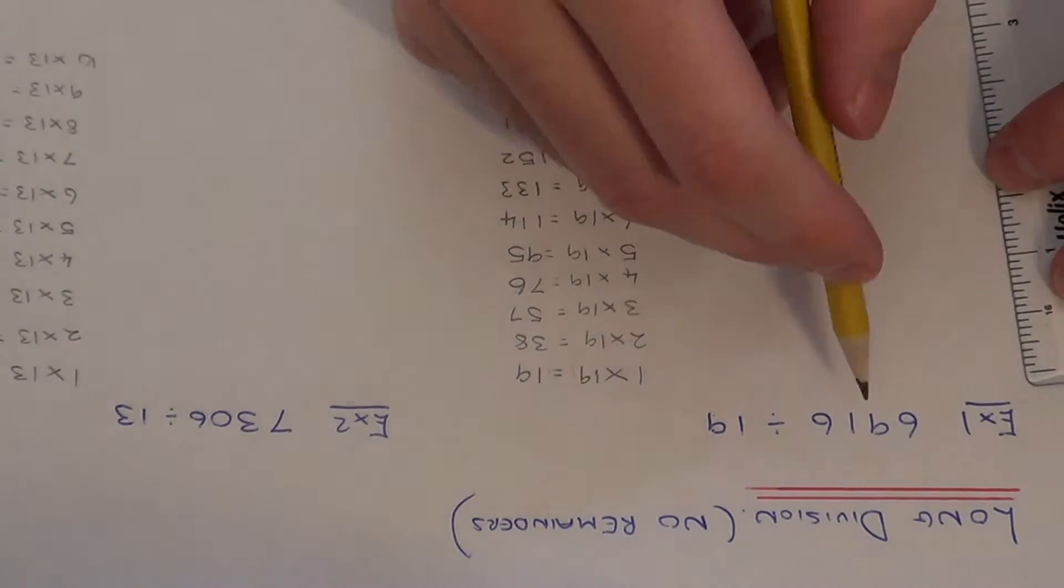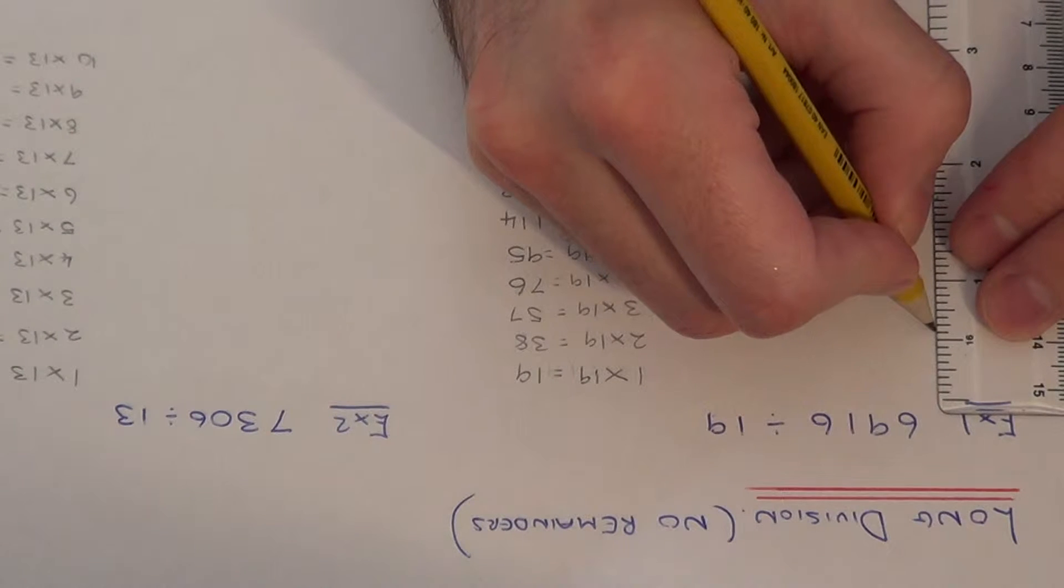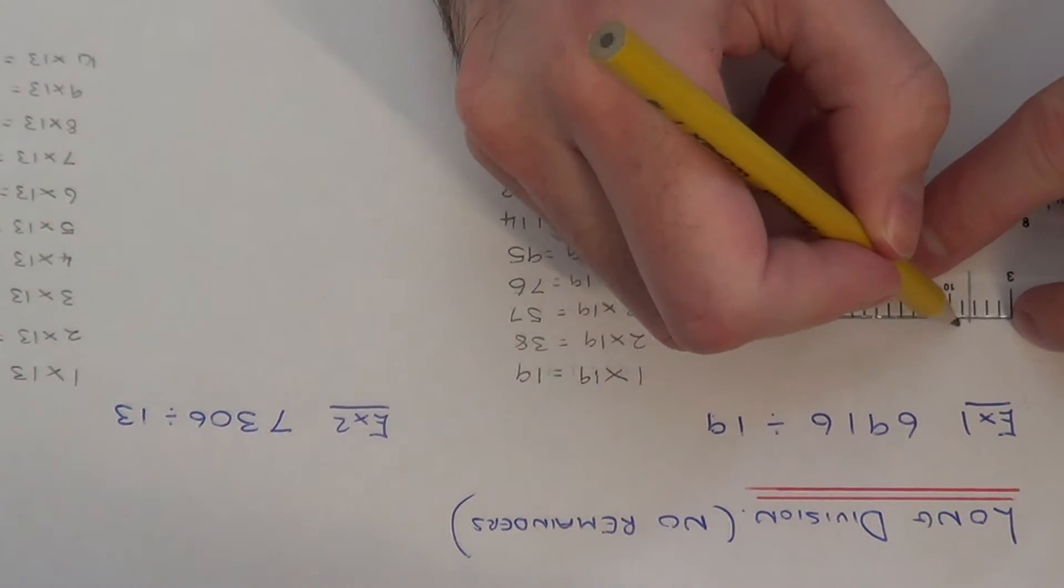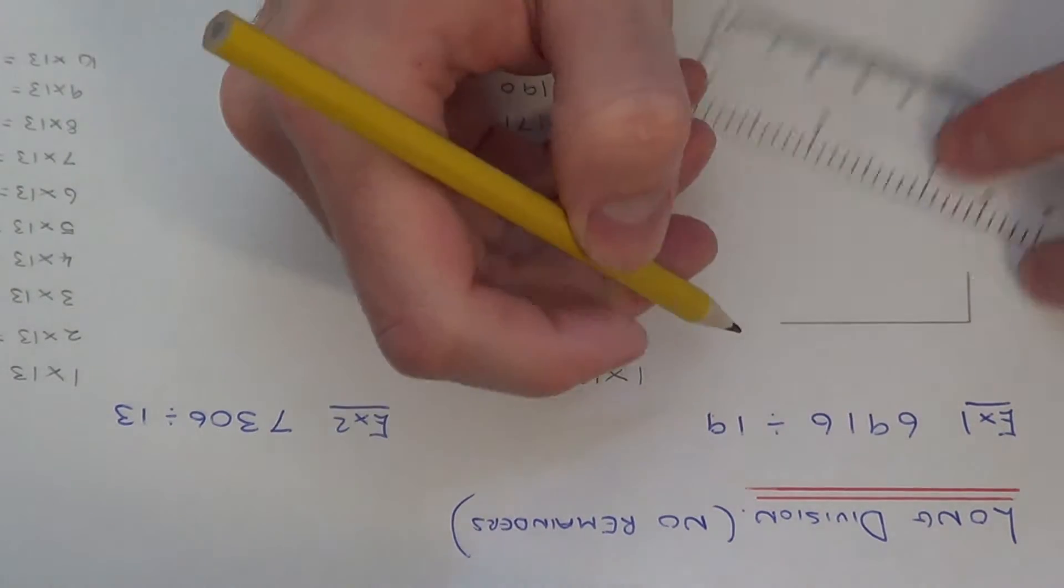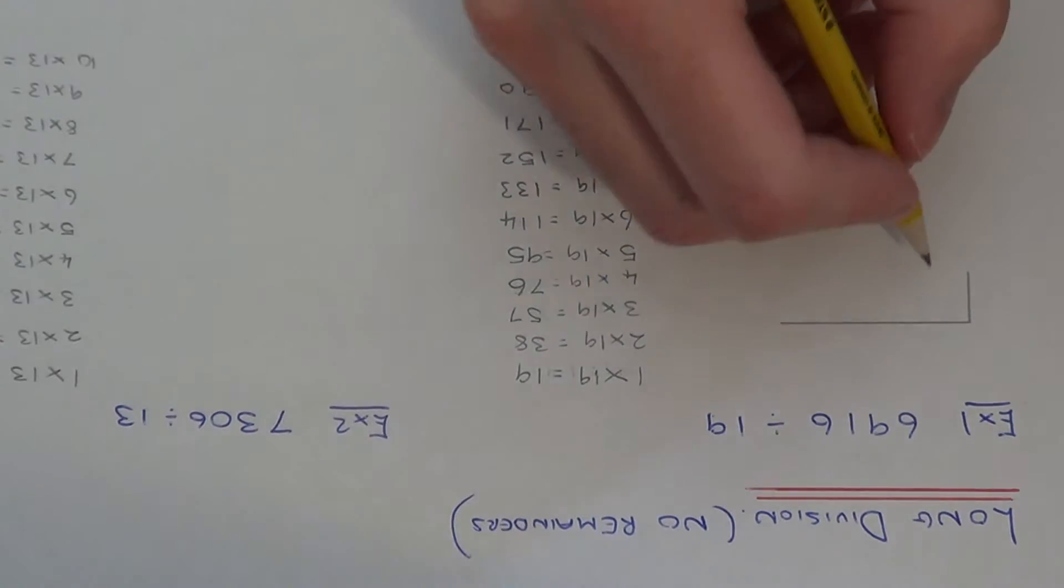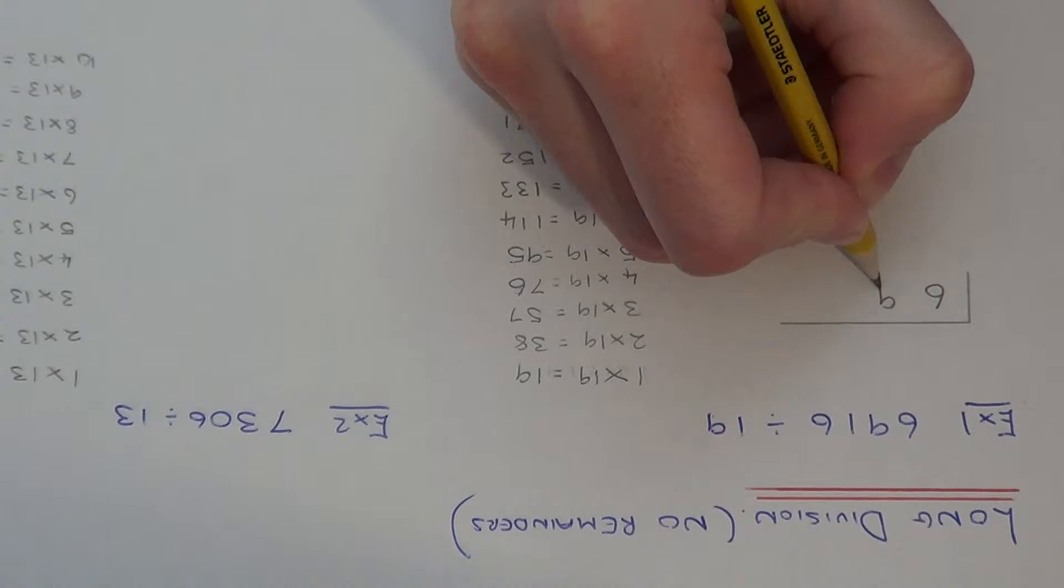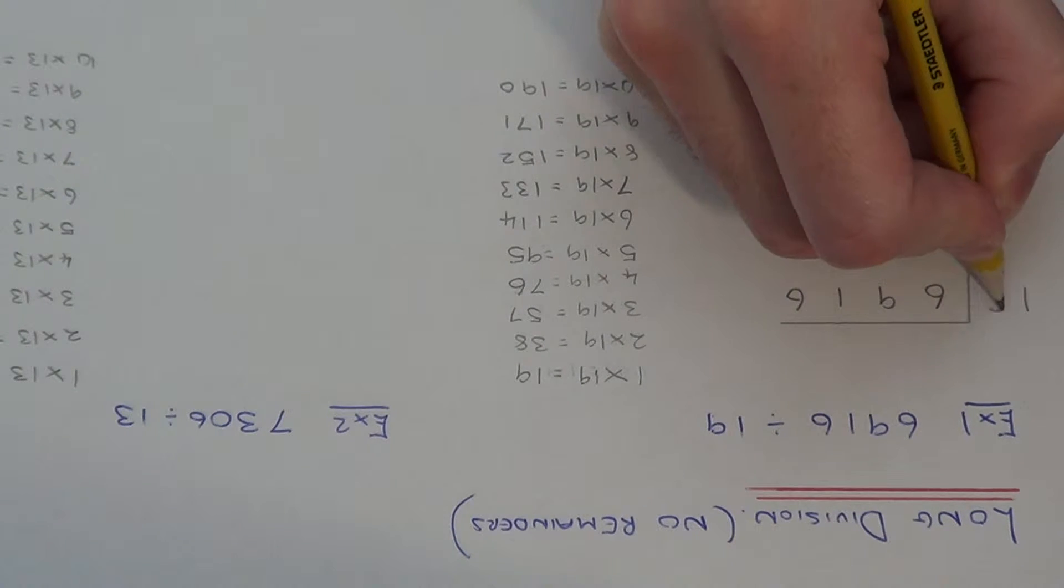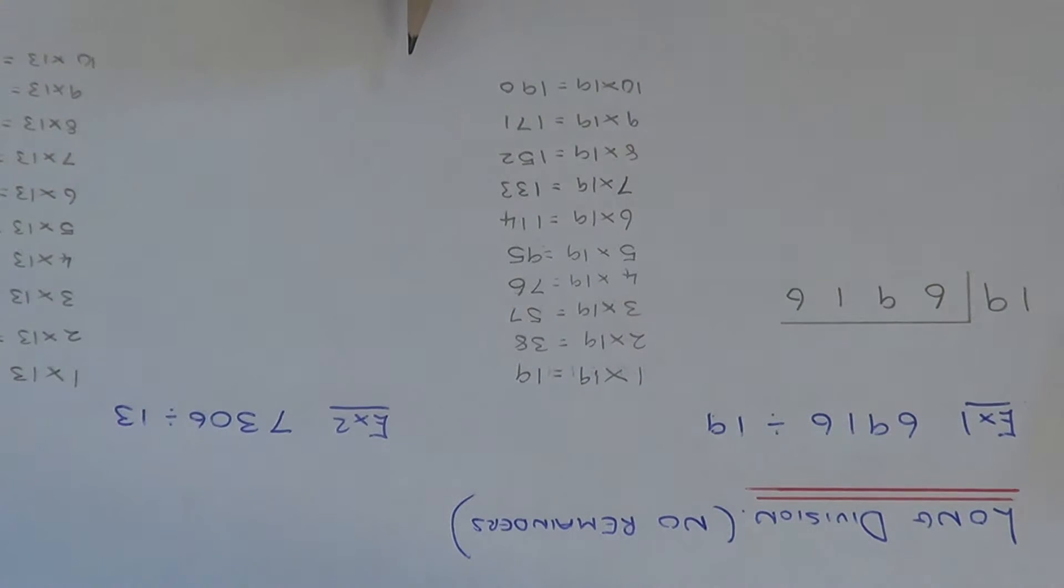So let's go over the long division then. So first of all, you need to set your division out like so. So if you put the 6916 underneath the horizontal line, and the number that we're dividing by will go at the start.